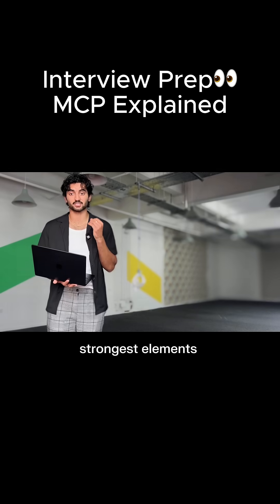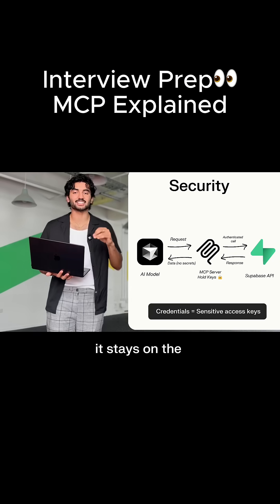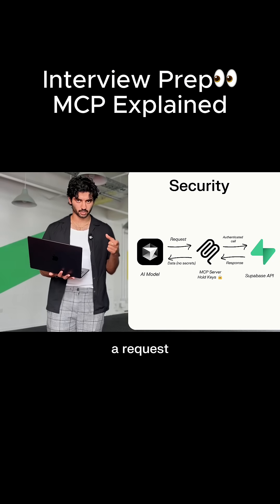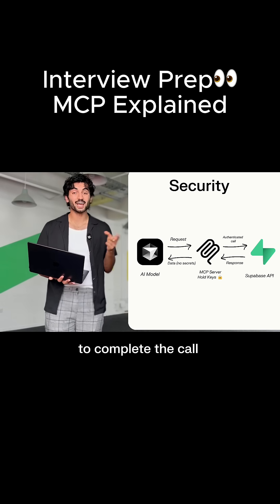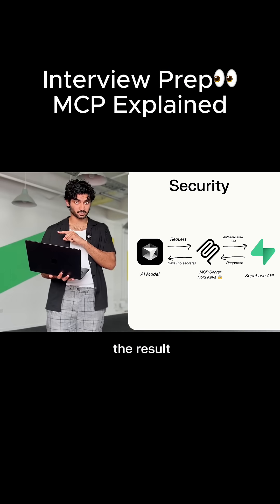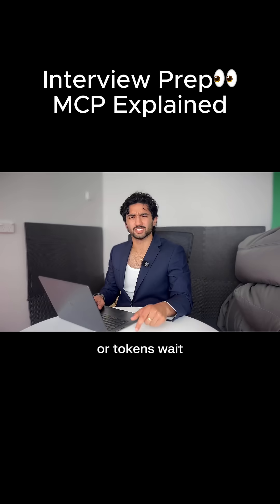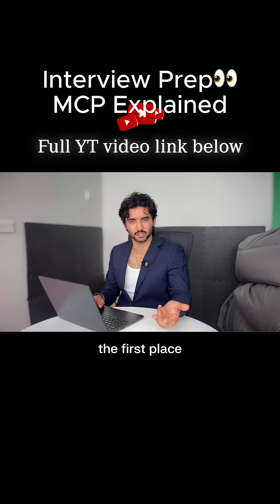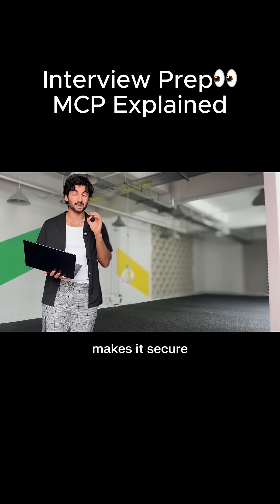As soon as you connect this many systems there have got to be security concerns — how is it handling this? This is one of the strongest elements of the design. The AI model never directly handles the credentials — they stay on the MCP server. The model sends a request and the server uses its own authentication to complete the call and sends back the result. The AI never sees any secrets or tokens. So even if a prompt got hijacked, the model couldn't leak your API key because it never had it in the first place. Exactly — the separation between intelligence and access makes it secure.